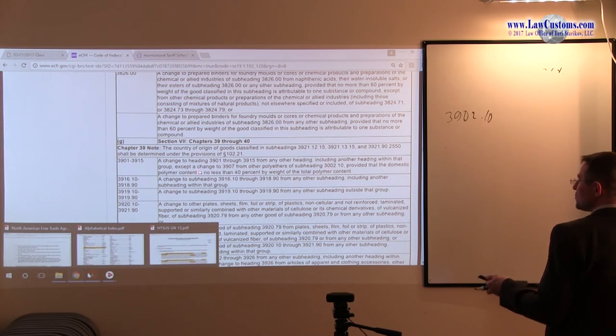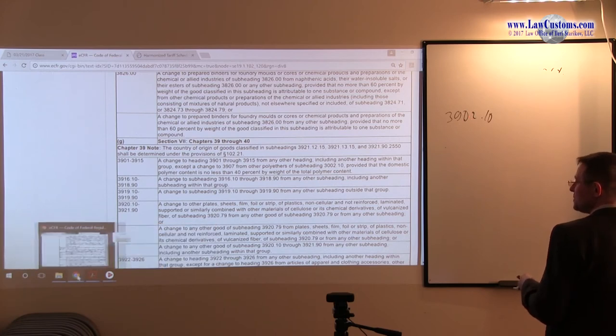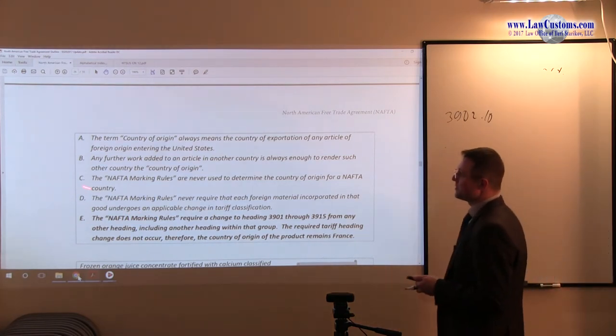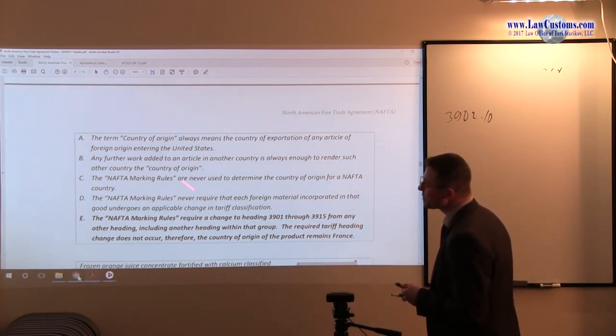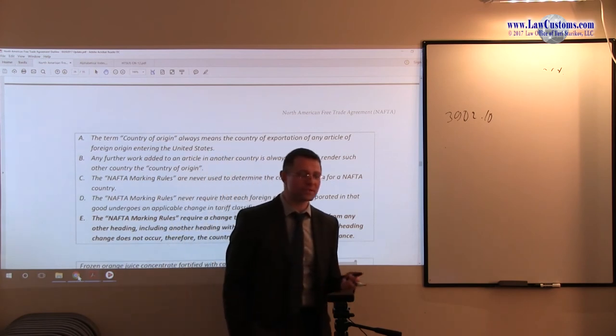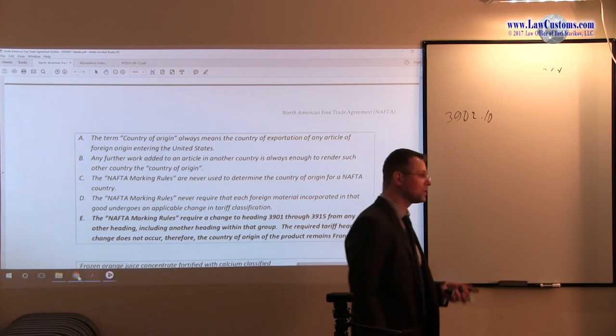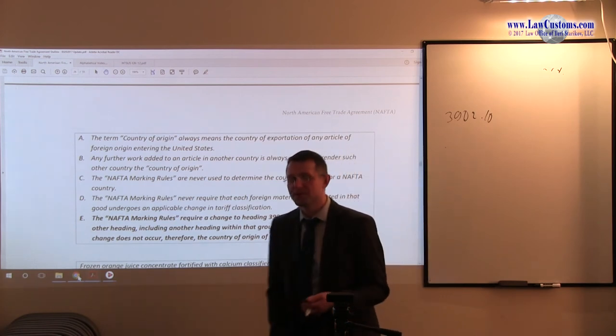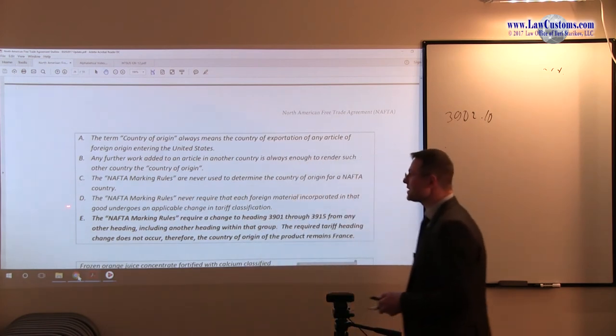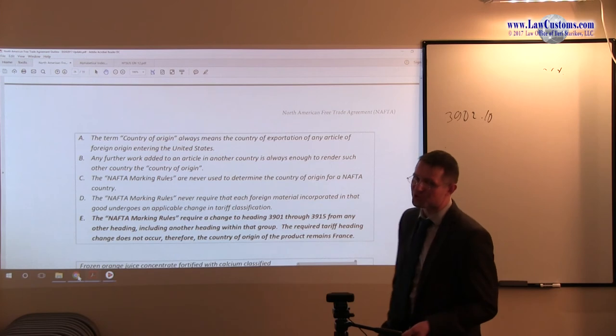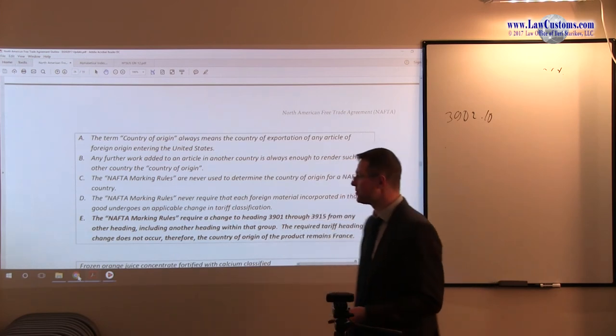Because it says including another heading within a group, unless it's 39.07. Here it's 39.02, period. So no change takes place, so B is not correct. We eliminated those. This is where customs examiners suggest that part 102.20, section 102.20, is applicable because they are talking about NAFTA marking rules. Whenever you see NAFTA marking rules, think part 102.